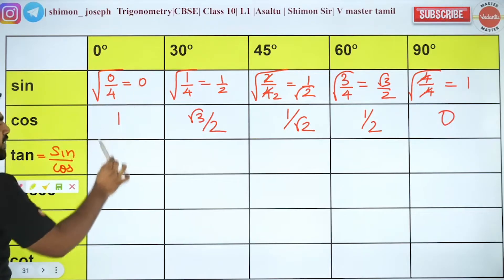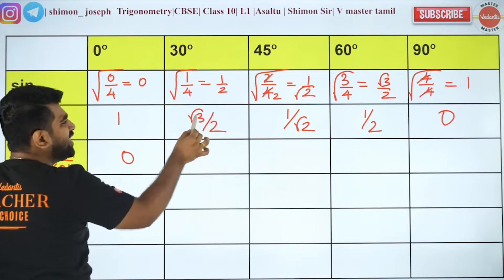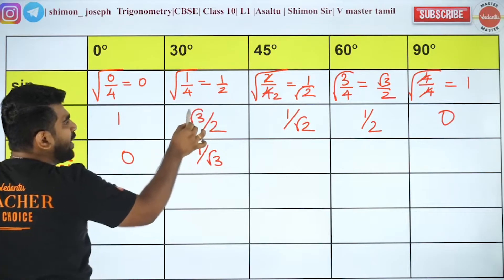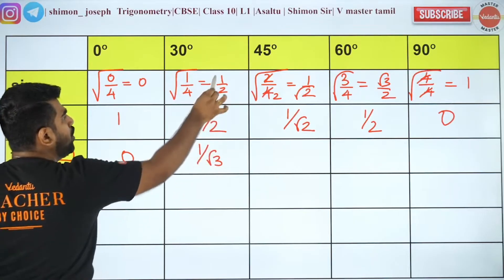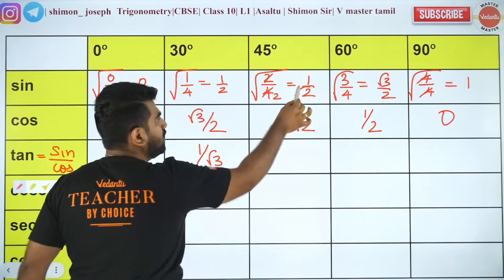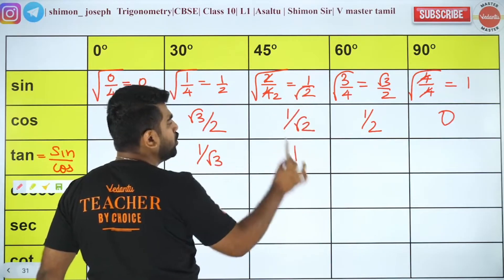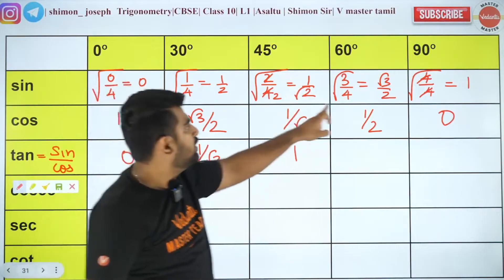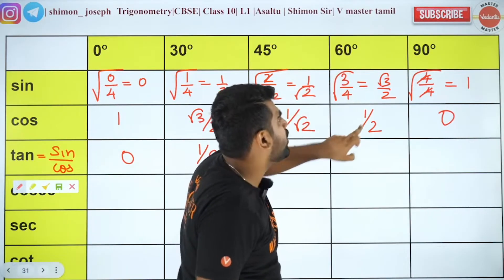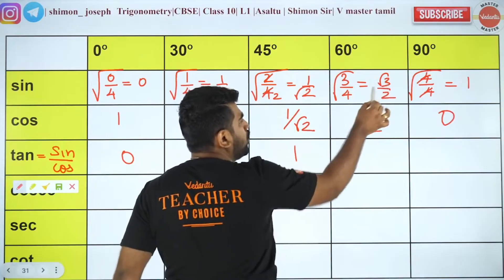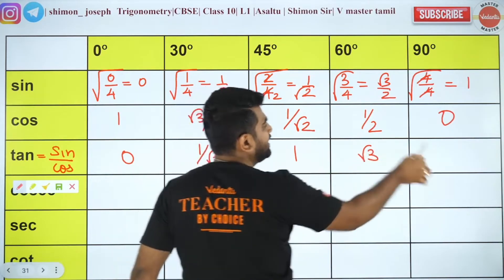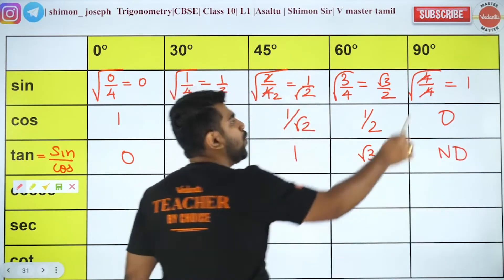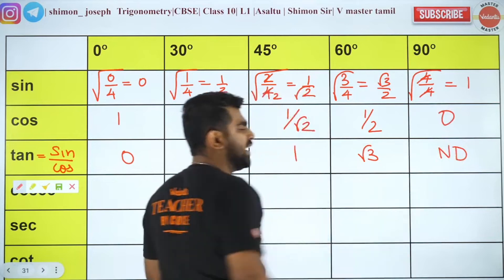Tan 0: 0 divided by 1 = 0. Tan 30: (1/2) divided by (√3/2) — the 2s cancel — so 1/√3. Tan 45: (1/√2) divided by (1/√2) = 1. Tan 60: sin 60 by cos 60 = (√3/2) divided by (1/2) = √3. Tan 90: 1 divided by 0 — not defined.